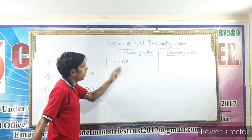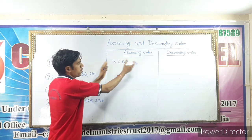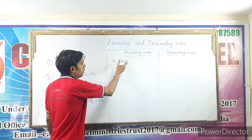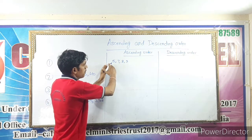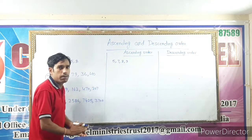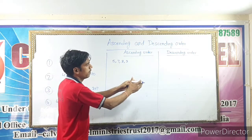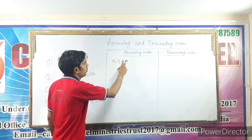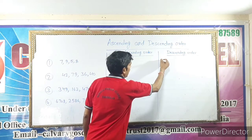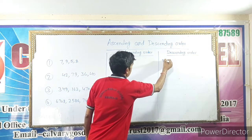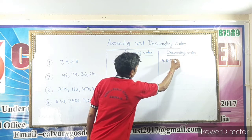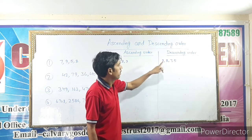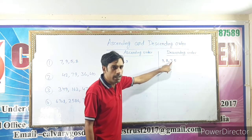Now we write descending order, which is just the opposite of ascending order. Ascending order goes from the smallest to the greatest. Descending order starts from the greatest and ends at the smallest. So the descending order is just the opposite: 9, 8, 7, and 5.